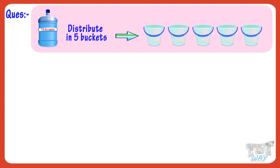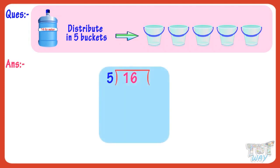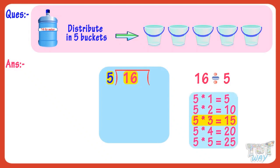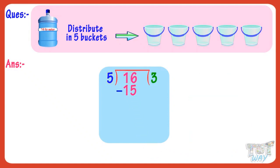We have to divide 16 by 5. The first digit is smaller than our divisor, so we divide the first two digits, that is, 16. The multiple of 5 that is smaller and nearest to 16 is 15. 5 multiplied by 3 equals 15. So write 3 in the quotient, and write 15 below the first two digits of the dividend. Now subtract 15 from 16, and we get 1.